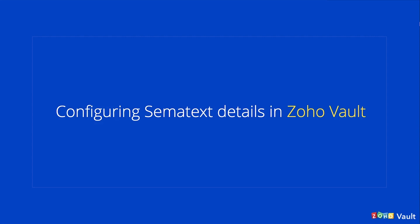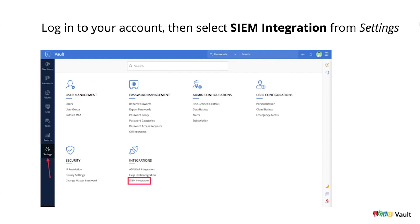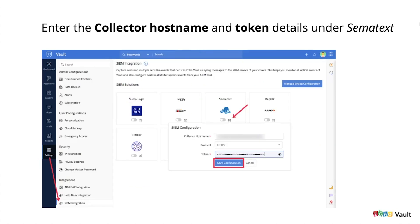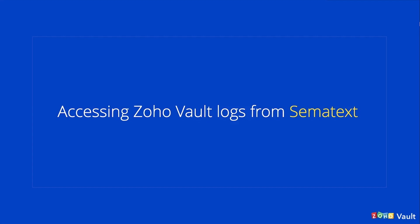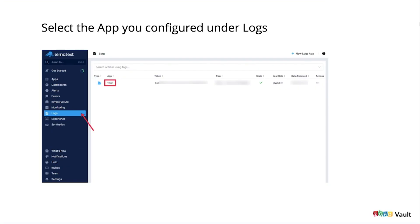To configure Sematext inside of Zoho Vault, jump to the SIEM integrations from your settings. Inside of the settings, click the tiny wrench button and add the host name and the token — this token is the index. Go ahead and save the config. Once you save the config, you can access your Zoho Vault logs from Sematext directly. This will start forwarding all of the logs — everything that goes on in Zoho Vault will be forwarded to this logs app inside of Sematext.